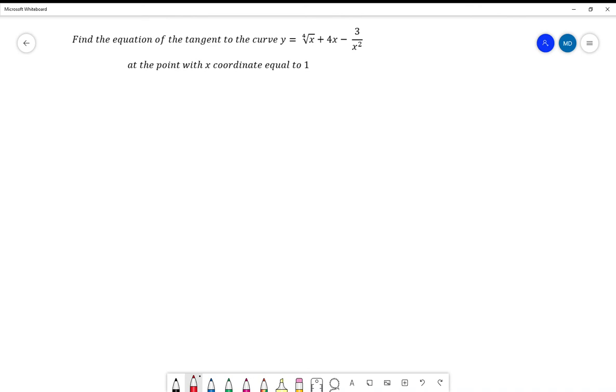Okay, let's have a look at this problem. So the first thing we've got to do with a problem like this is rewrite it in power form. So we've got y equals the fourth root of x plus 4x minus 3 over x squared.